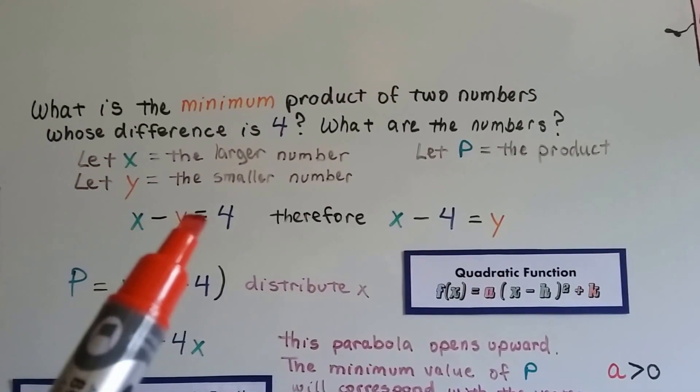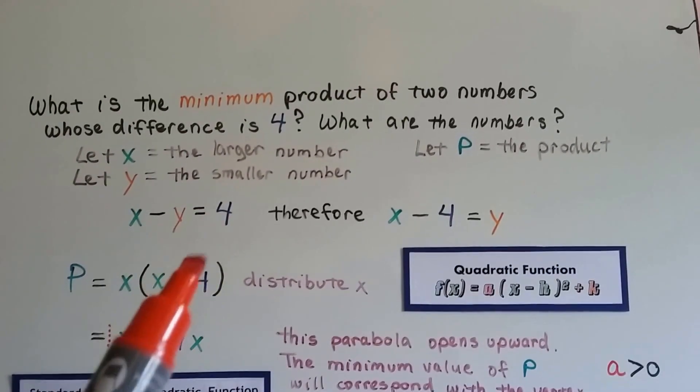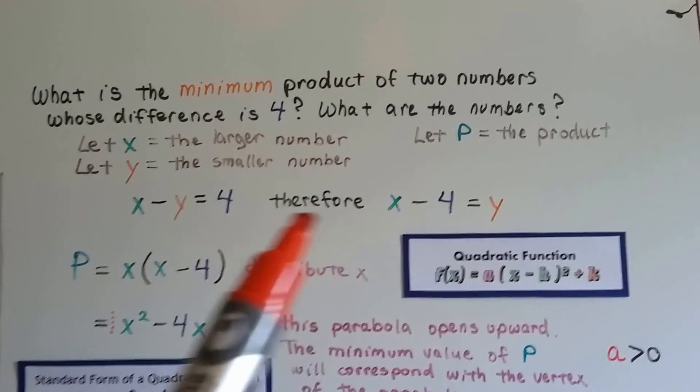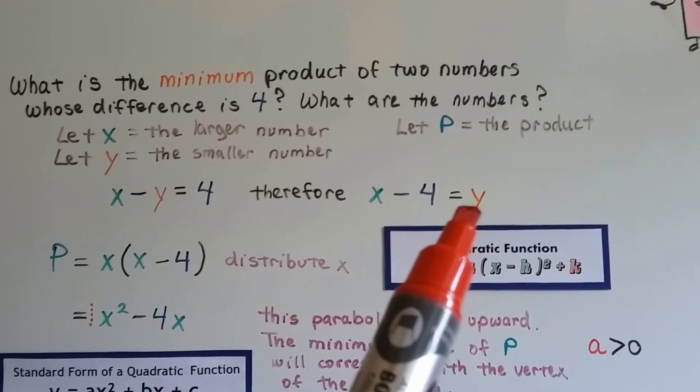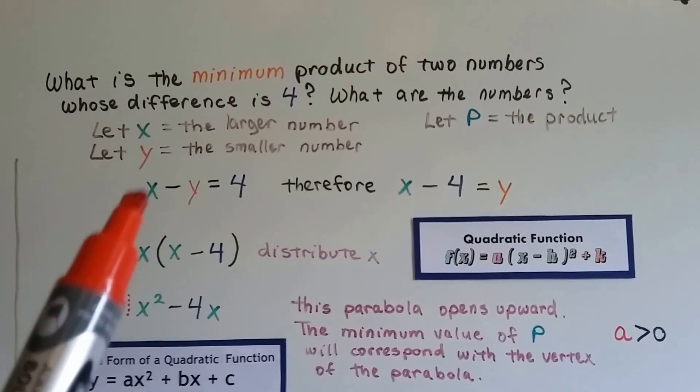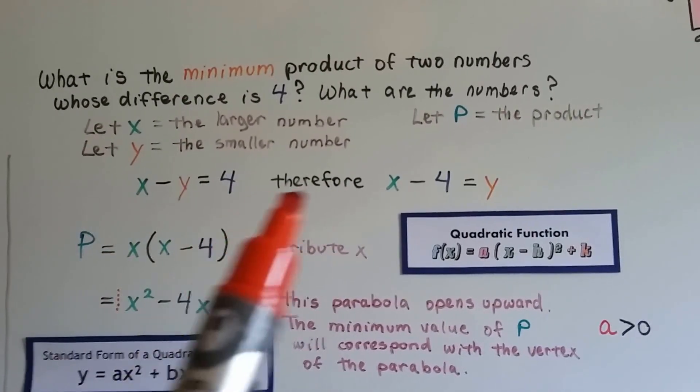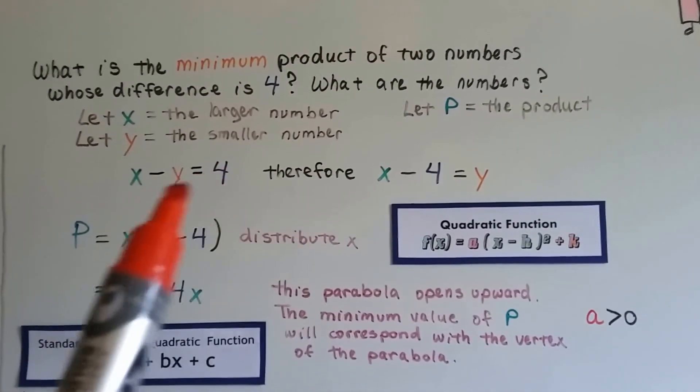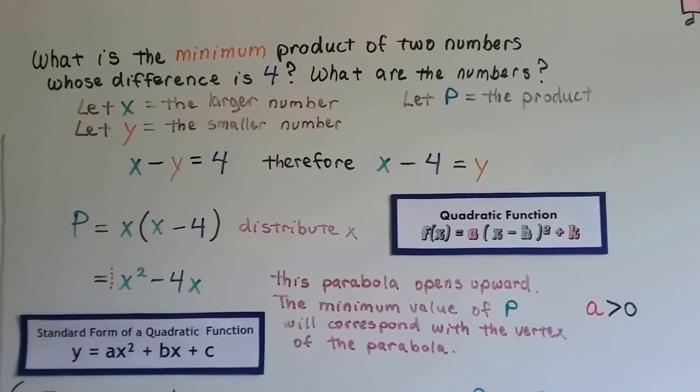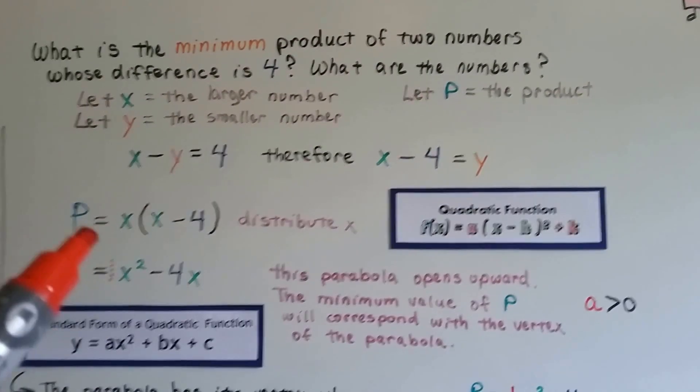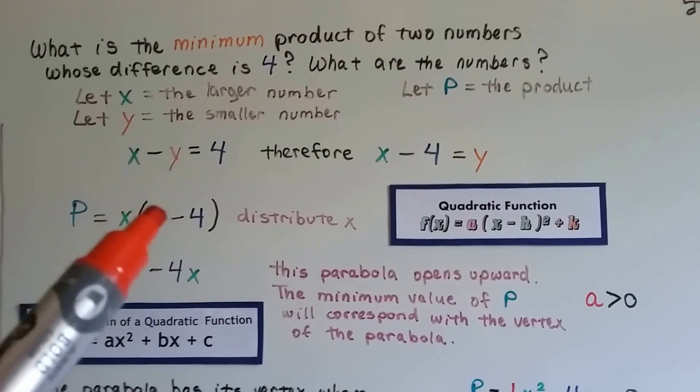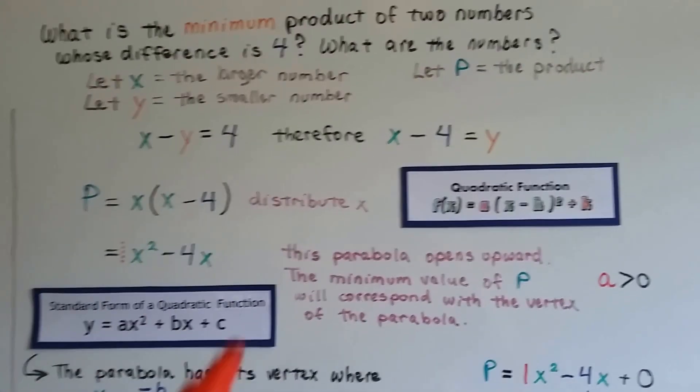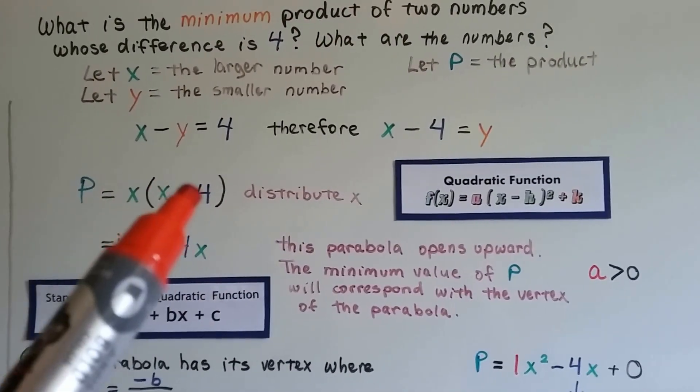We've got x - y = 4. We can use our property of addition to say x - 4 = y. It's the same thing. We can switch these two around. So now we can say y is x - 4. Our product is going to be x times (x - 4). We can distribute this x as x² - 4x.